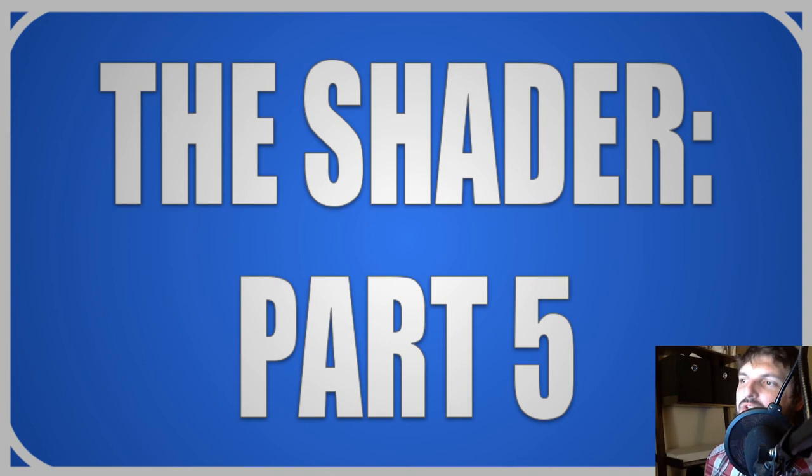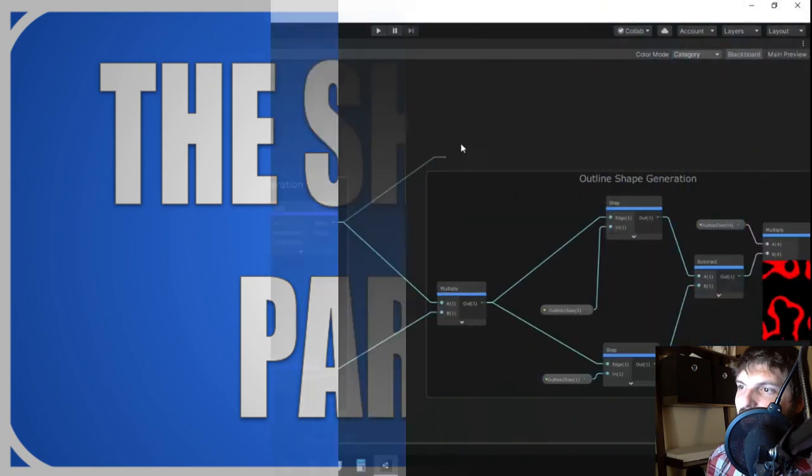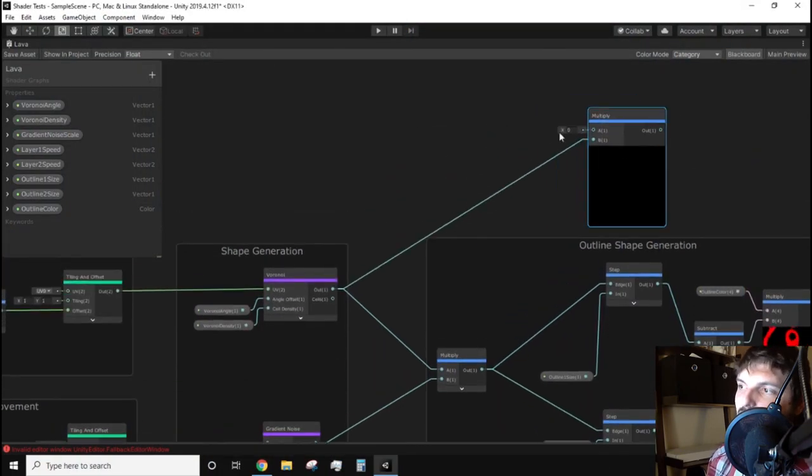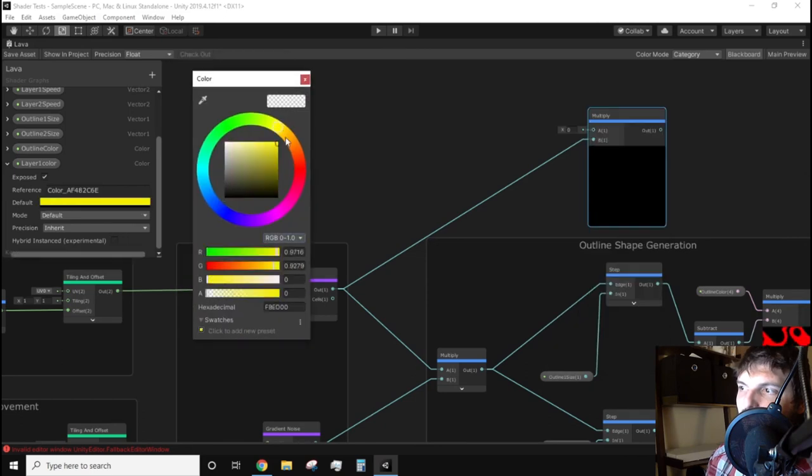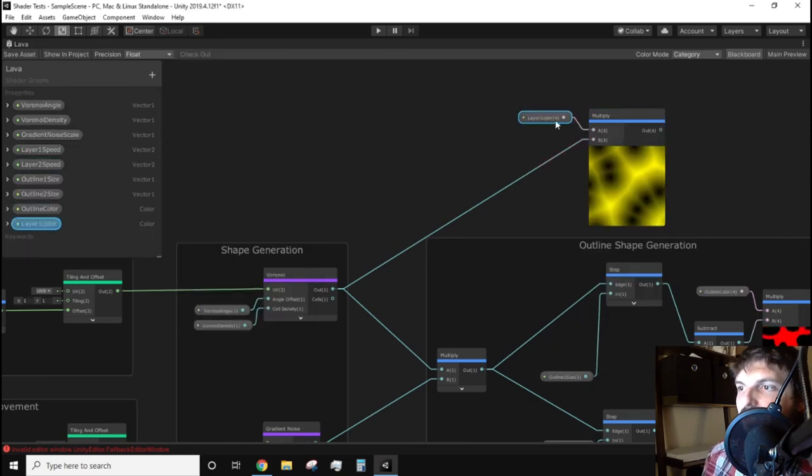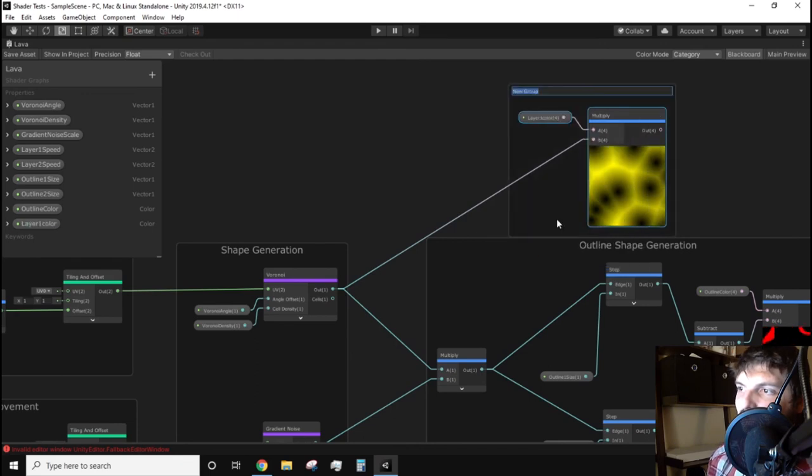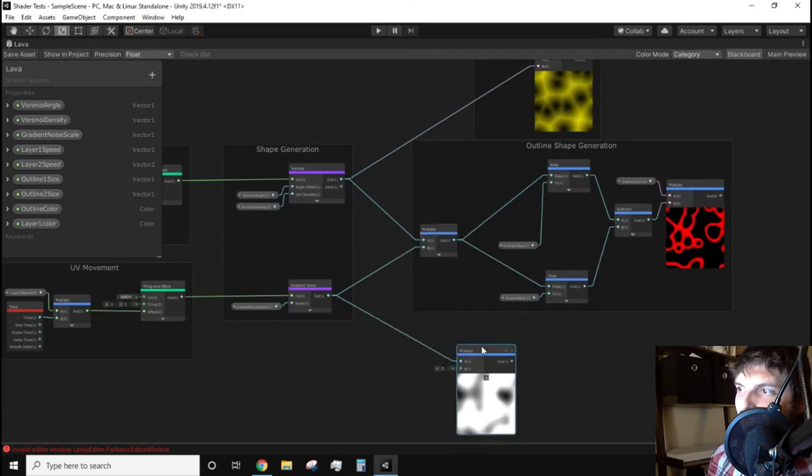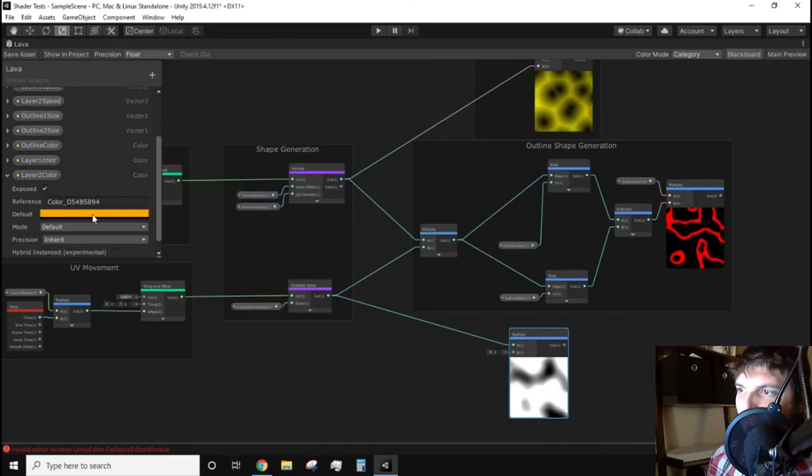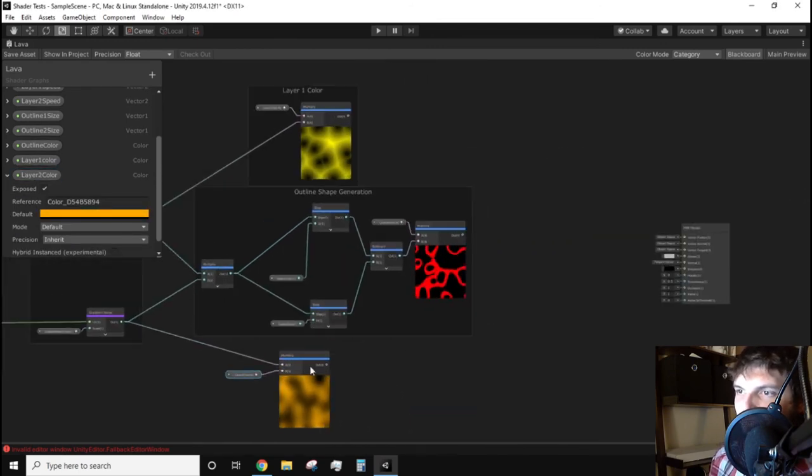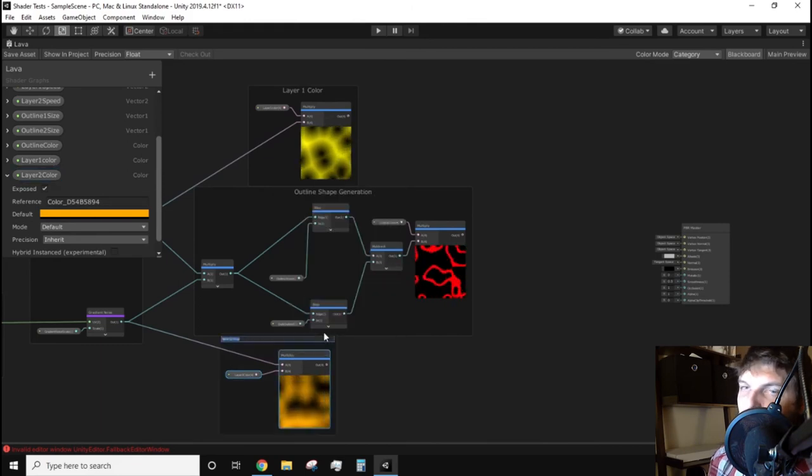Finally we are nearing the final steps of the shader graph. I want to control both layers of noise to have their own color. So that means creating two more color properties in the blackboard which I will call layer1 color and layer2 color. We need to create a multiply node near the Voronoi node, connect the noise output to the multiply node and then connect our layer1 property to the other input of the multiply. We will repeat this process for the gradient noise node as well but use our layer2 color property. You can group these color multiplications and call them layer1 color and layer2 color respectively for further organization.